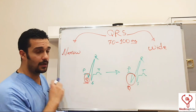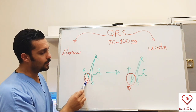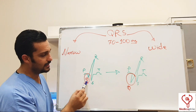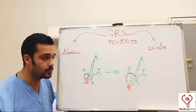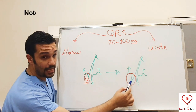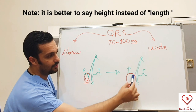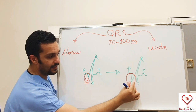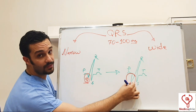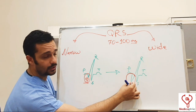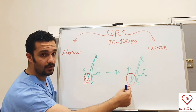Before getting into the narrowing and widening of the QRS complex, let's talk about the Q wave. The Q wave is present in normal ECGs, but we call it a pathological Q wave when its length becomes more than 25% of the preceding R wave, and in width or duration it becomes more than one millimeter or more than one small square. This is called a pathological Q wave and it is one of the indications for MI.